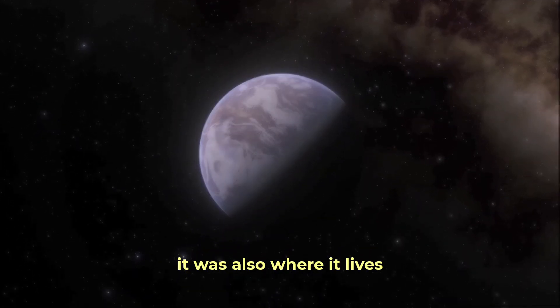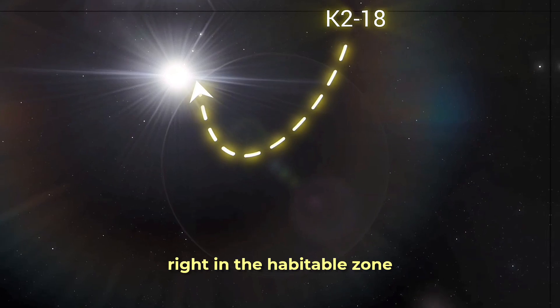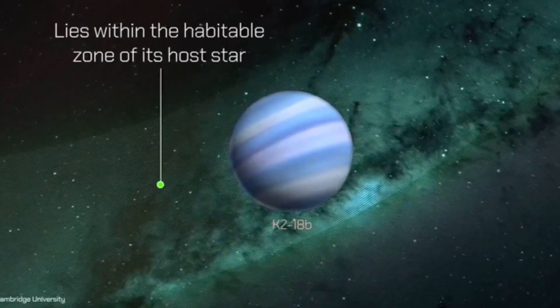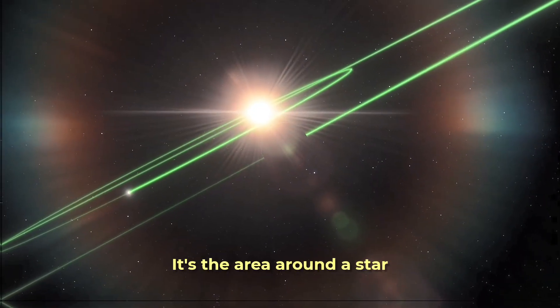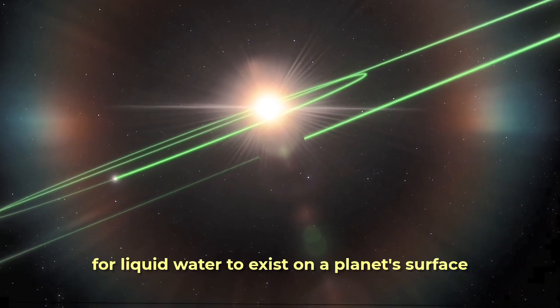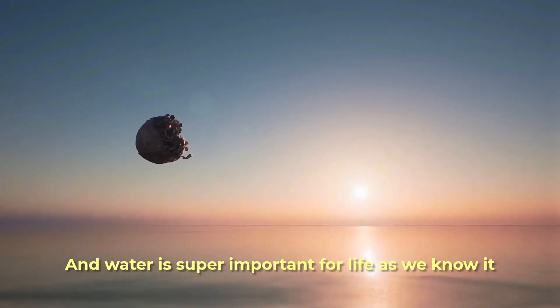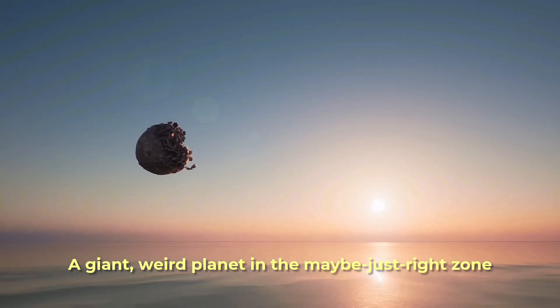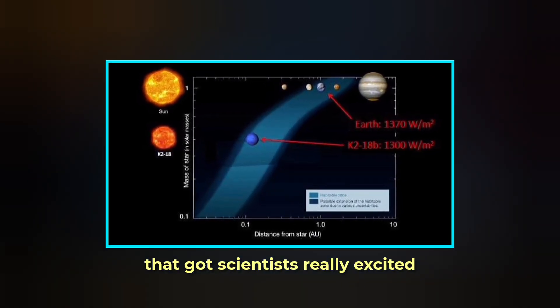What made K2-18b extra special wasn't just its weird size, it was also where it lives. It orbits its star, K2-18, right in the habitable zone. That doesn't mean it has life, but it's like the Goldilocks zone. Not too hot, not too cold. It's the area around a star where the temperature might be just right for liquid water to exist on a planet's surface, if it has the right kind of air. And water is super important for life as we know it. A giant, weird planet in the maybe-just-right zone—that got scientists really excited.